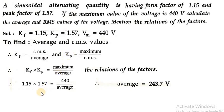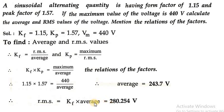We can calculate RMS in either way. Using Kf: RMS = Kf × average = 1.15 × 243.7, which gives 280.254 volt. So this way, if the factors are given, we can find out the various values. And if the various values are given, then also we can find out the various factors. We have seen both types of numerical problems. In the exam, thank you.